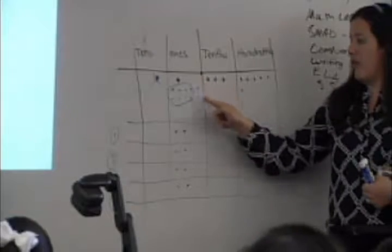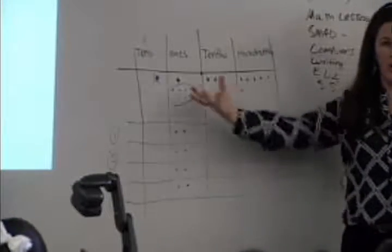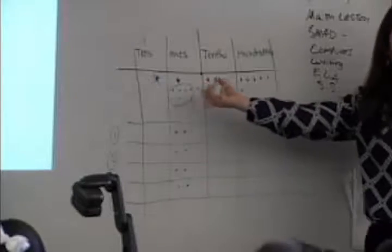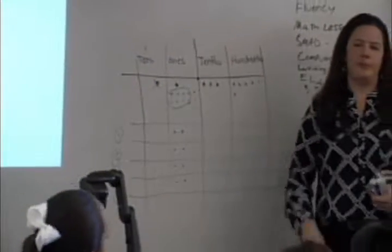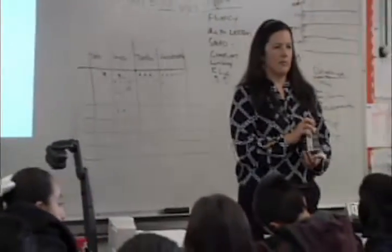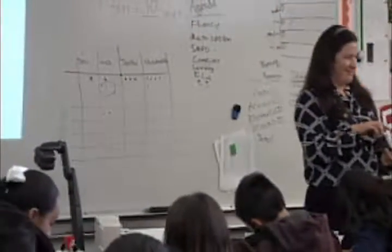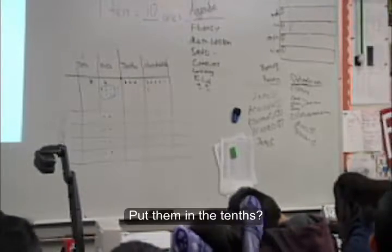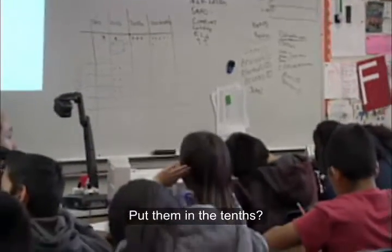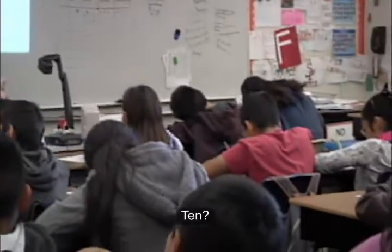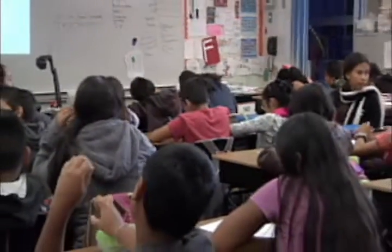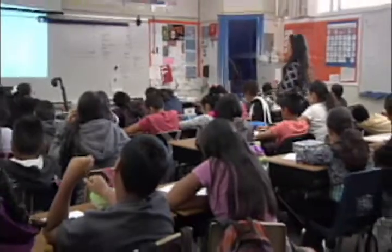'Because I don't have enough for my four equal groups. What do I do with those three ones? Tell your partner.' After discussion, the teacher asks how many tenths will be needed. A student answers: 'Ten.' Teacher confirms: 'Ten for each.'